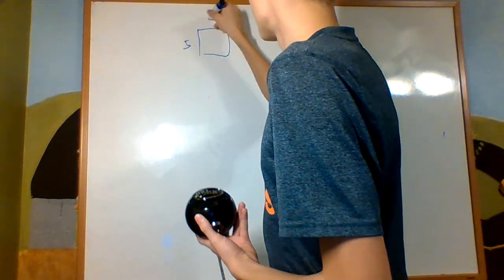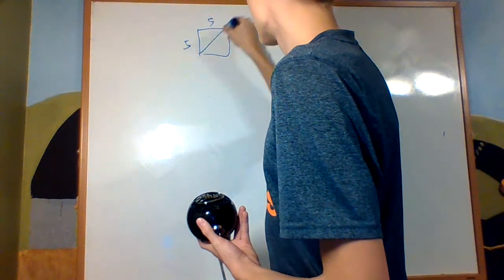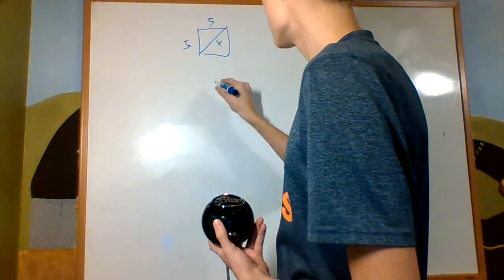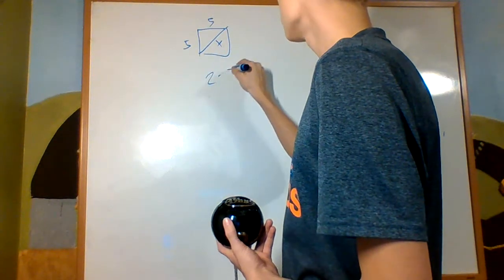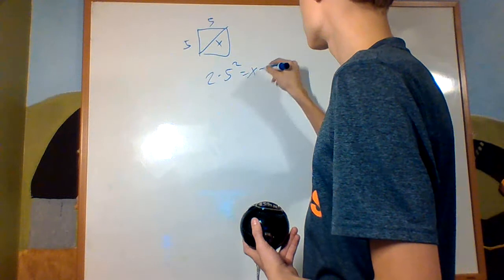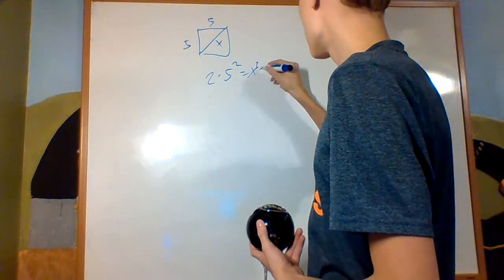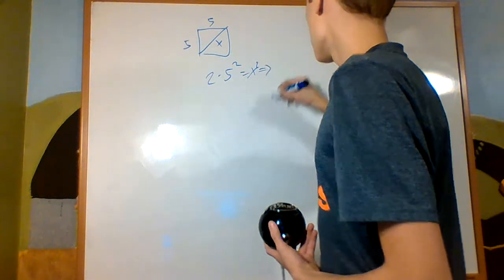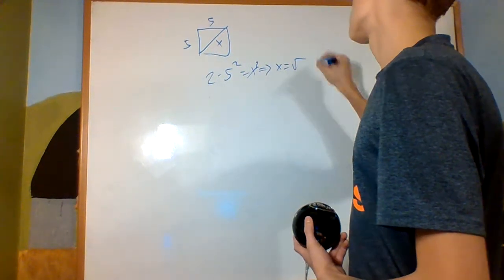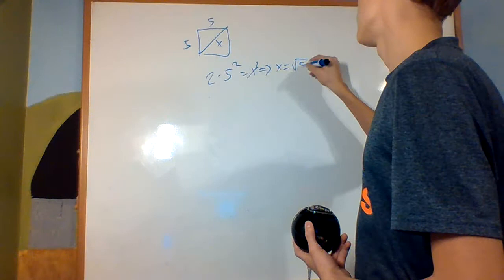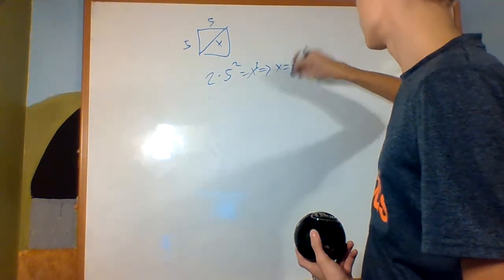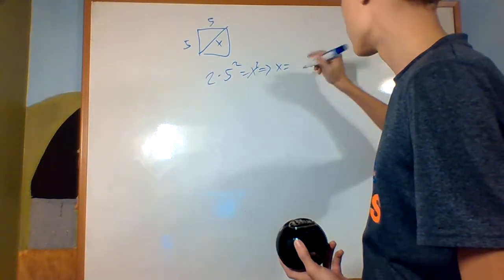Problem 277: a 5 by 5 square with diagonal X. Applying the Pythagorean theorem: 2 times 5 squared equals X squared, so X equals 5 times the square root of 2.